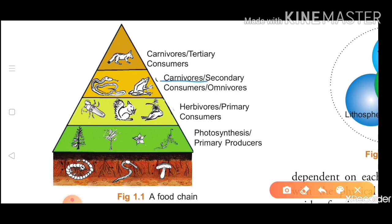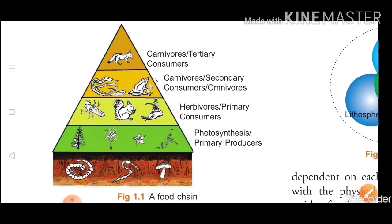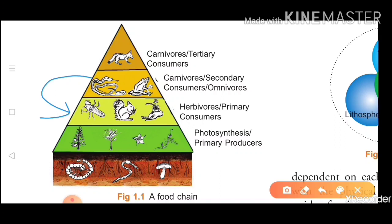Next, let's talk about omnivores, which we also call secondary consumers. They are dependent on the primary consumers. Omnivores are the type of consumers that eat both — they can eat flesh and plants both.